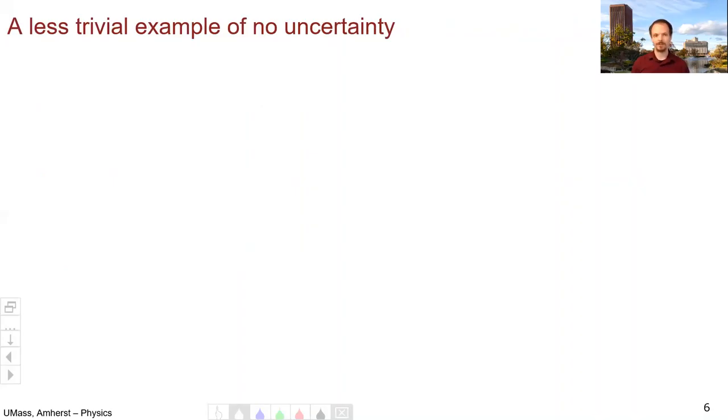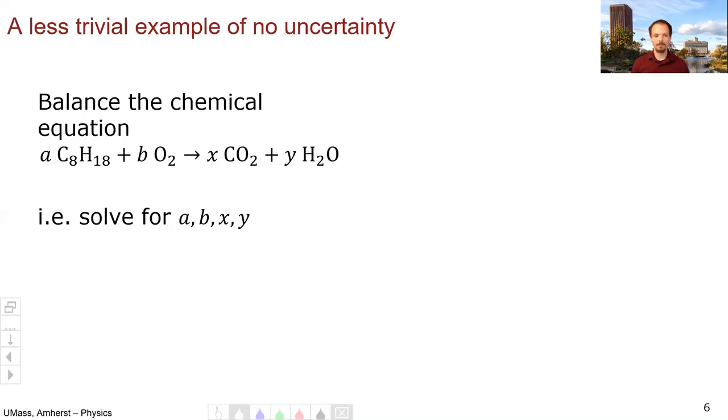Those examples were a little trivial. Let's find something a little more complex. So imagine you saw this on a chemistry exam and you were asked to balance this chemical equation: AC8H18 plus BO2 yields XCO2 plus YH2O. And you're solving for A, B, X, and Y.